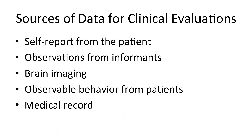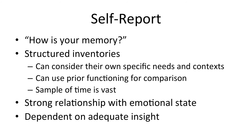Neuropsychologists deal with many different types of data. Beyond testing, important data sources include self-reported information from patients, observations from informants (usually family members), brain imaging, observable behavior in the office, and the medical record. Self-report is probably the most common form of assessment — a primary care doctor simply asking, how's your memory? The answer is often unstructured, and it's not always clear what people mean by the word 'memory.' There are structured inventories that get very specific about memory and other types of cognitive abilities.